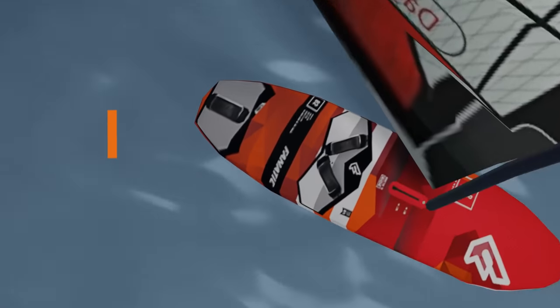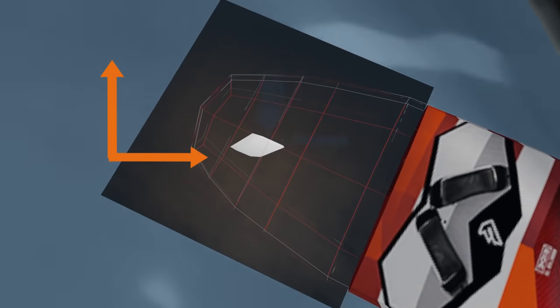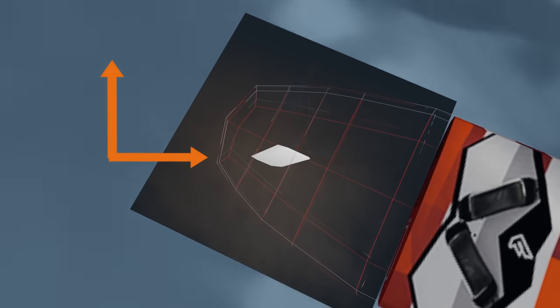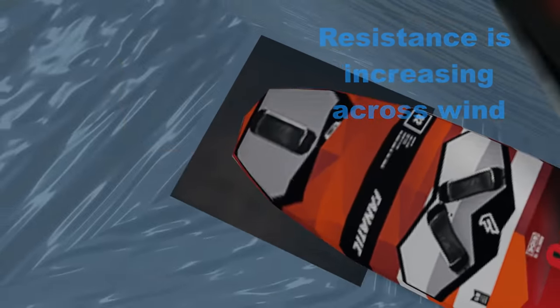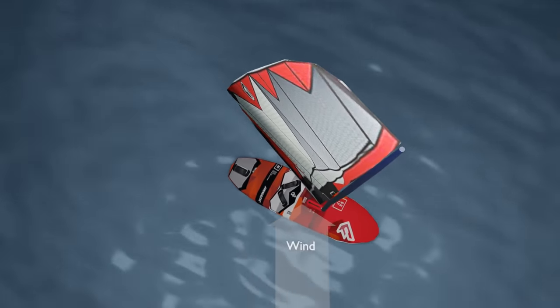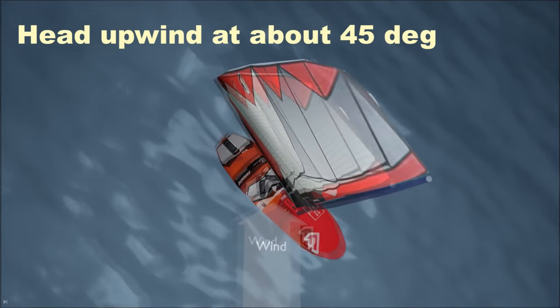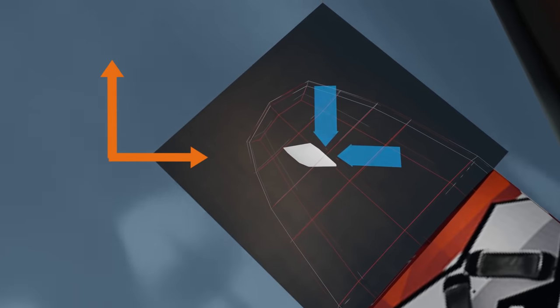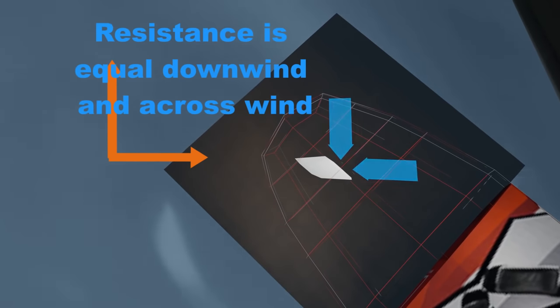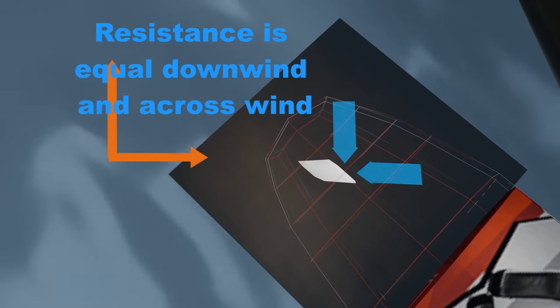If the board heads upwind slightly, the angle of the fin changes relative to the wind, and the downward resistance gets smaller, and the forward resistance gets a little larger. If the board heads upwind at an angle of about 45 degrees, the angle of the fin relative to the wind has now reached a point where the resistance against the fin downwind is about the same as it is in the forward direction.